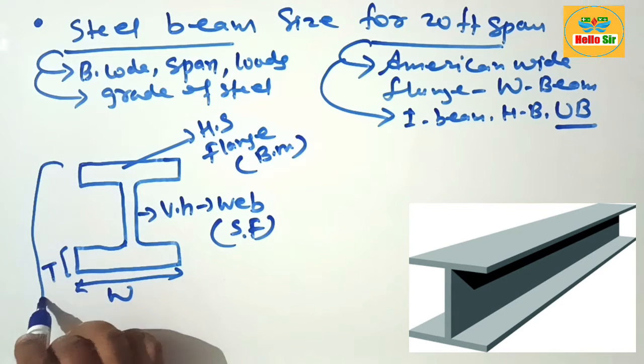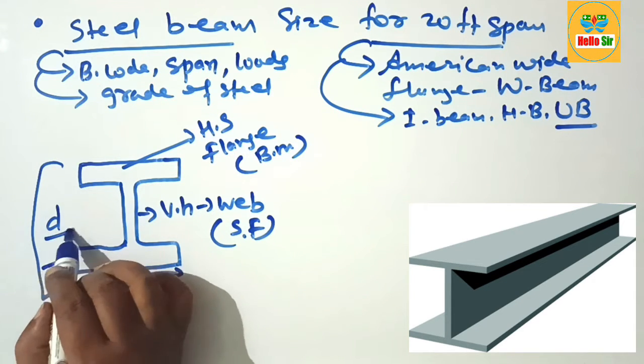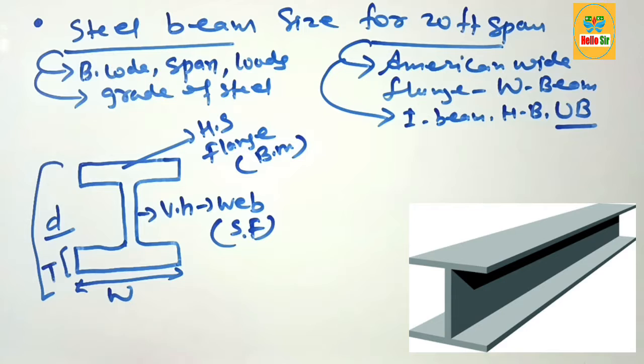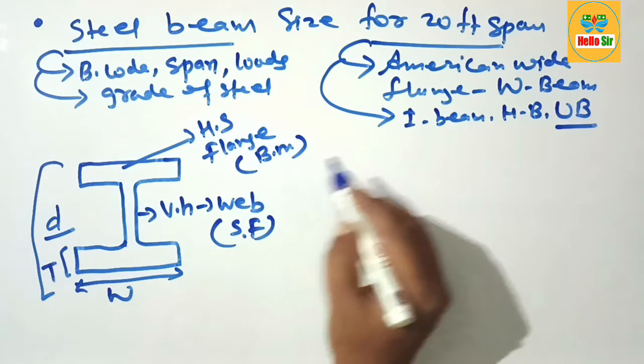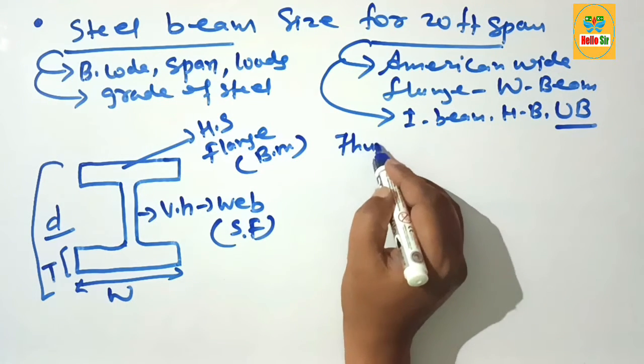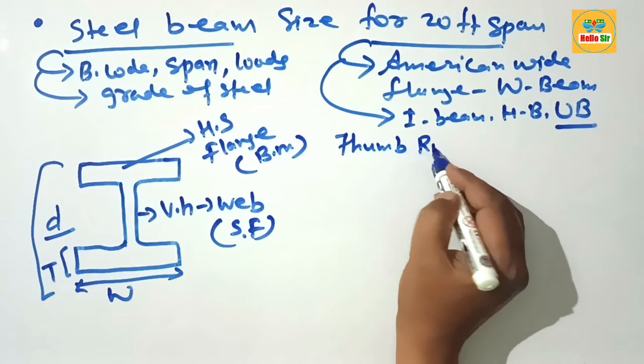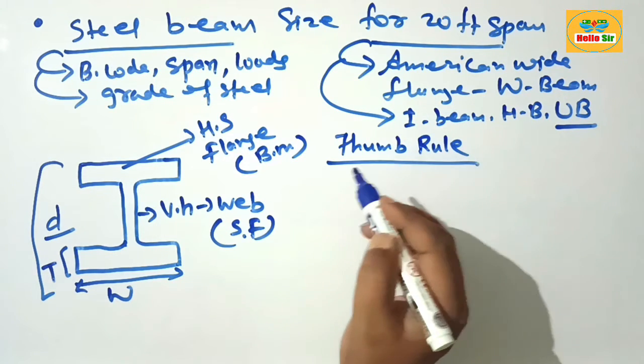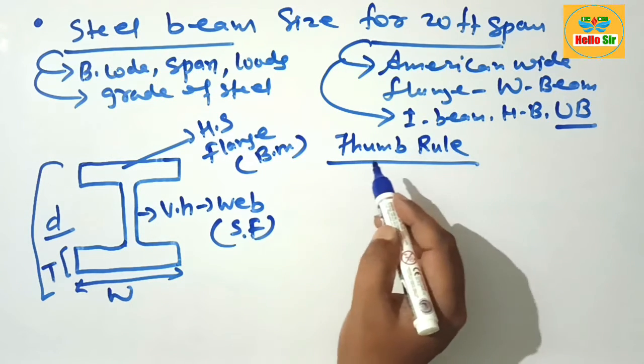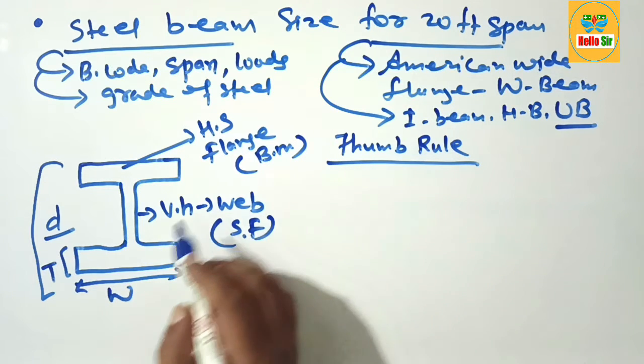What is the thumb rule for sizing of steel beams? Sizing of steel beam means you have to find out the flange width and the depth. The depth of steel beam should be your span in inches